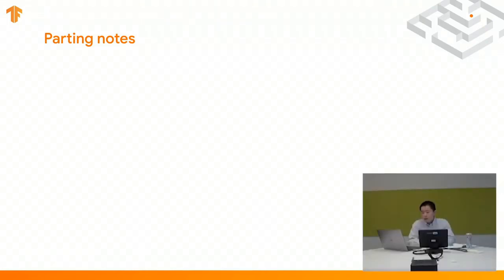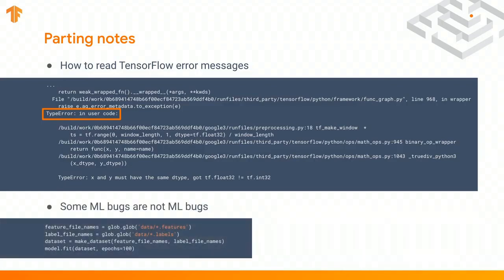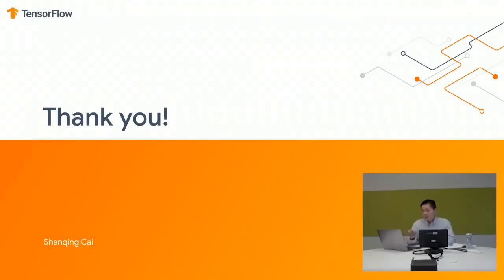Some final advice: the authors of TensorFlow have done a lot of work recently to improve error messages, so next time you get an error, be patient and read through it — especially sections labeled 'in user code,' which may contain surprisingly useful debugging information. And lastly, some machine learning bugs are not machine learning bugs — they're general programming bugs. For example, a user coding two lists of files for features and labels, feeding them into a dataset, and seeing worse-than-expected model accuracy — the reason may be a simple general programming mistake. If you're interested in the answer to that puzzle, reach out. Thank you very much for your attention.